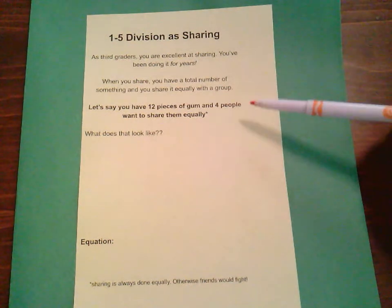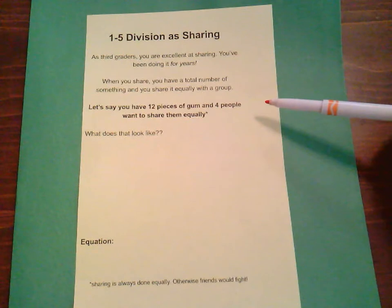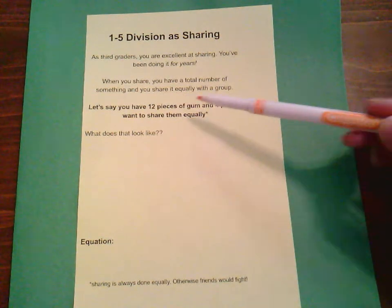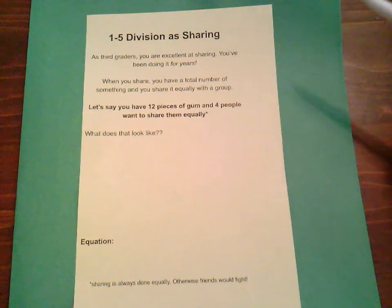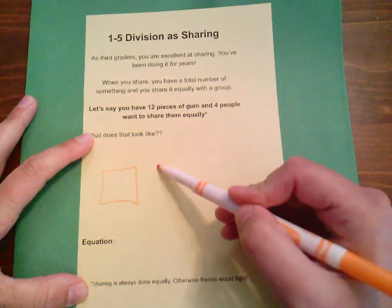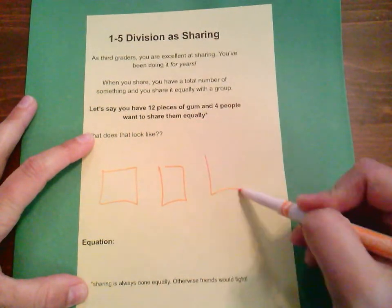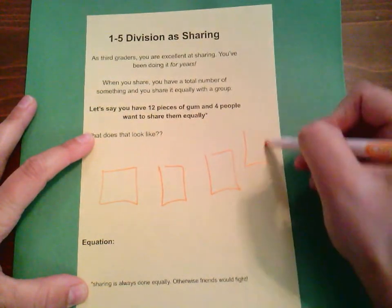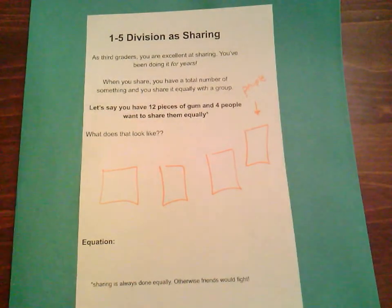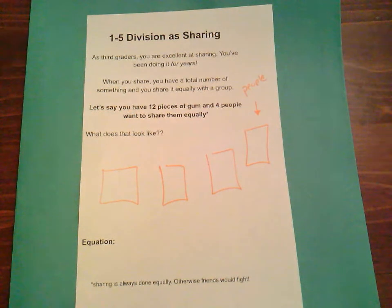Let's take a look at this problem here. Let's say you have 12 pieces of gum and four people want to share them equally. What would that look like? 12 pieces of gum and four people. So I'm going to draw a picture of what that would look like, and here I'm going to use these squares to represent people. Go ahead and draw your four people. And now we have 12 pieces of gum.